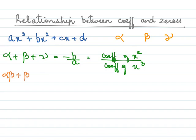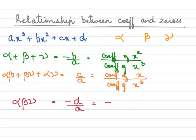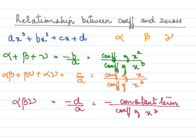The next relation is: αβ + βγ + αγ = c/a, where c is the coefficient of x and a is the coefficient of x³. The last relationship is: αβγ = -d/a, where d is the constant term divided by the coefficient of x³, with a negative sign.